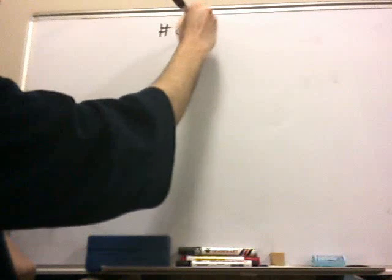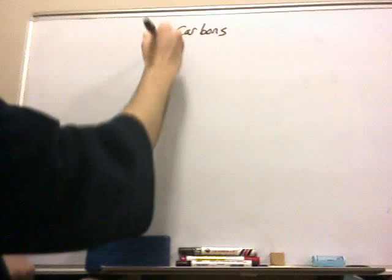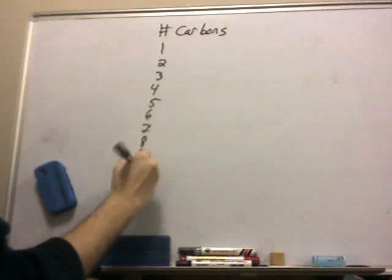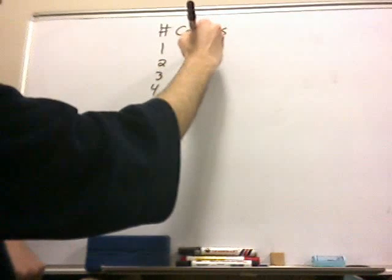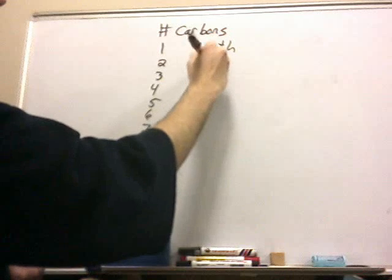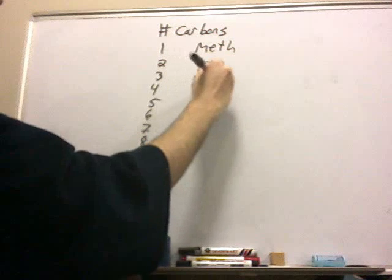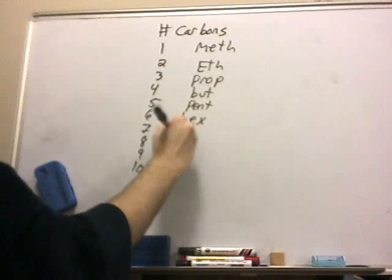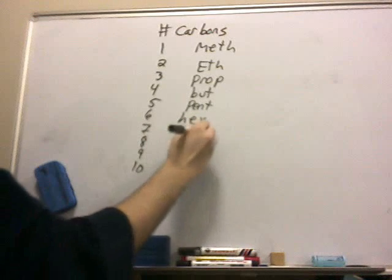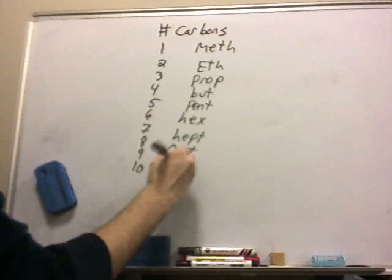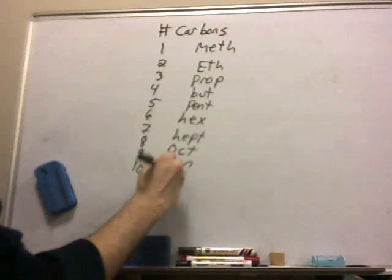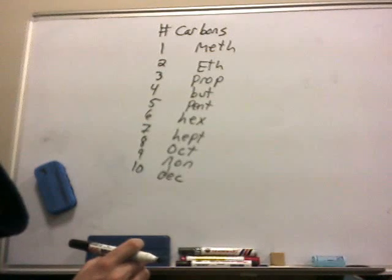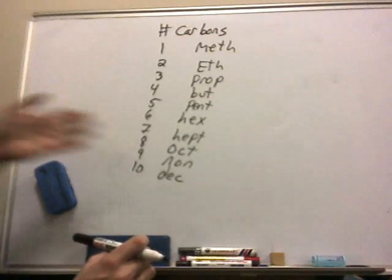Meth, this is the number of carbons: 1, 2, 3, 4, 5, 6, 7, 8, 9, 10, and here's the prefix: meth, eth, prop, but, pent, hex, hept, oct, non, and dec. Eleven is undec, and twelve is dodec, so it follows a basic logical structure based on Latin.